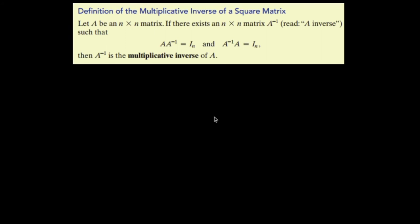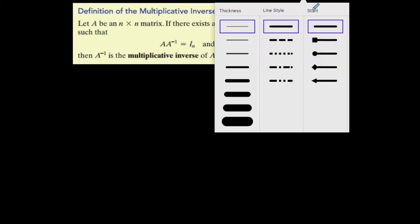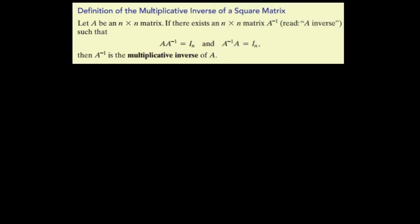I want to talk about multiplicative inverses of square matrices. A multiplicative inverse only exists for a square matrix, and not all square matrices have one. What is a multiplicative inverse? The product of a matrix and its multiplicative inverse should be the identity matrix.